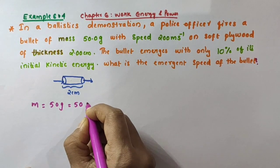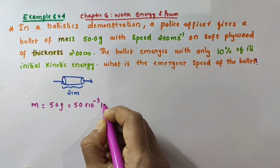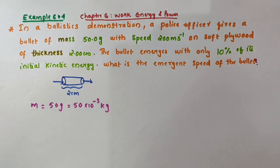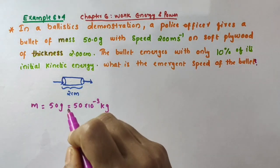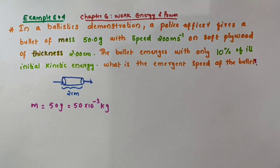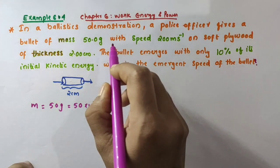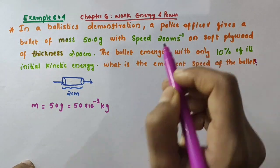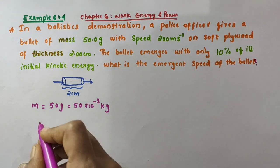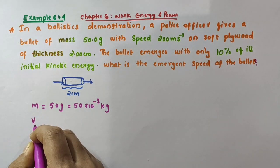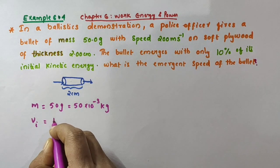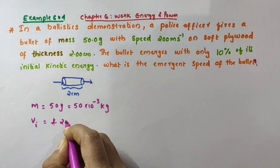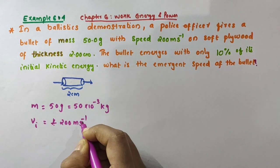50 grams is equal to 50 × 10⁻³ kilograms, because kilogram is the SI unit of mass. The mass is given in grams here but the SI unit of mass is kilogram, so we have converted grams into kilograms. Now it is moving initially with speed 200 meter per second, which I am taking as the initial velocity V_i, equal to 200 m/s.